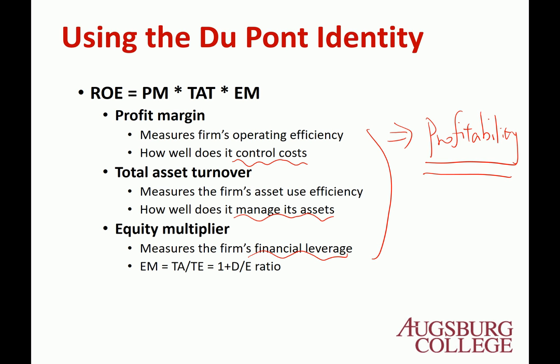So there's the reason why we learn the DuPont identity. Suppose you have a problem in your ROE — you think your ROE is too low, which means your firm is not really profitable. Then you can immediately look at these three factors: which one leads to the low ROE. It may be low profit margin, it may be low total asset turnover, or it may be low equity multiplier. If you believe one of them is low, you can try to increase that factor — maybe controlling cost more effectively, using the asset more effectively, or increasing the leverage.